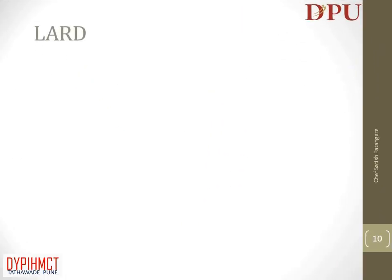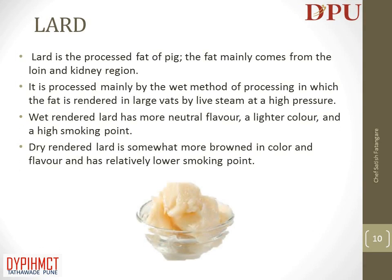In this slide we will discuss about lard. Lard is the processed fat of pig, mainly from the loin and kidney region. It is processed mainly by the wet method, in which fat is rendered in large vats by live steam at high pressure. Wet rendered lard has a more neutral flavor, lighter color, and high smoking point. Dry rendered lard is more brown in color and flavor, with a relatively lower smoking point.